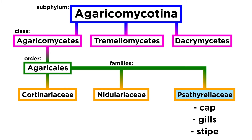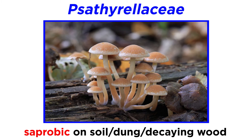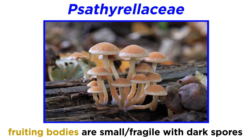Now let us move to a family that has the general structure of a gilled mushroom with a cap, gills, and a stipe — the family Psathyrellaceae. We will discuss three genera in this family: Coprinellus, Coprinopsis, and Psathyrella. Fungi in Psathyrellaceae are almost always saprobic. You can find these fungi on soil, dung, decaying wood, and many other substrates. The fruiting bodies are generally small and fragile, with dark-colored spores.